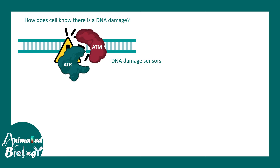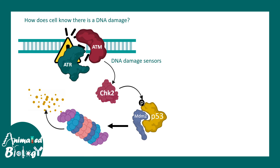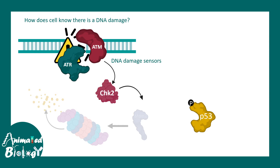DNA damage is sensed by several sensor proteins such as ATM or ATR kinases. ATM stands for Ataxia Telangiectasia Mutated. These kinases sense the double-stranded DNA break and activate another downstream target known as CHK2 kinase. CHK2 phosphorylates p53, and once it is phosphorylated, the degradation of p53 is prevented. In general, there is a protein known as MDM2 which binds to p53 and ubiquitinates it for degradation. The phosphorylated p53 is released from MDM2 and cannot be degraded.